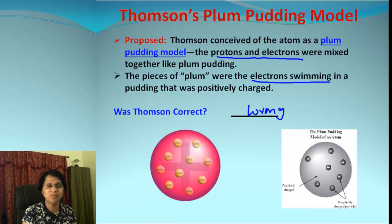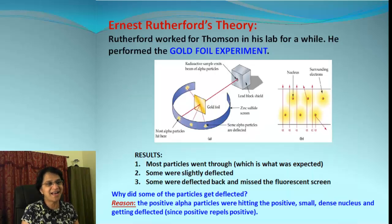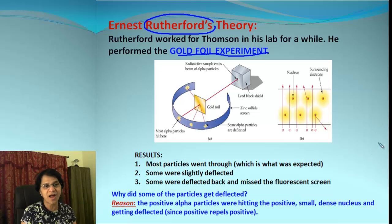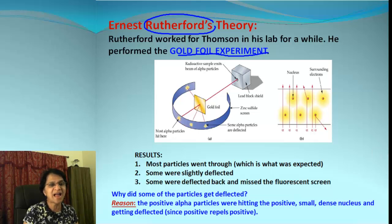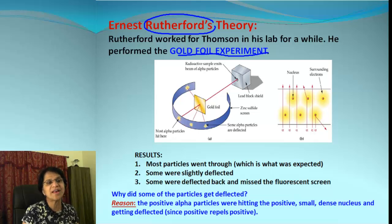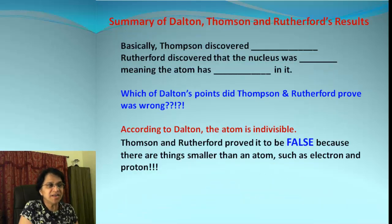The next scientist was Rutherford, who performed the famous gold foil experiment. The main idea was to find the nature of particles. Most particles went straight through, which was expected. Some were slightly deflected, and some were deflected back entirely. Rutherford explained this by saying the positive alpha particles were hitting a small, dense, positive nucleus and getting deflected — proving that the nucleus of an atom has a positive charge.